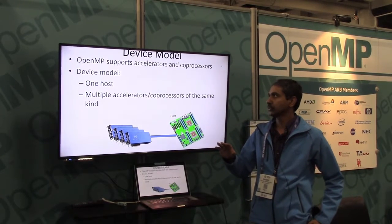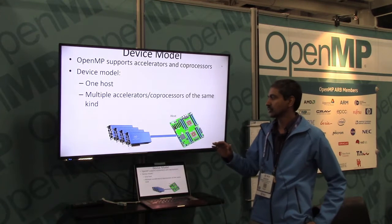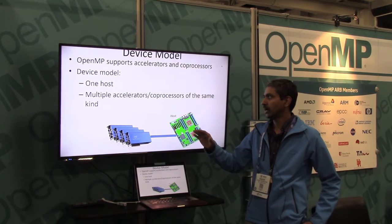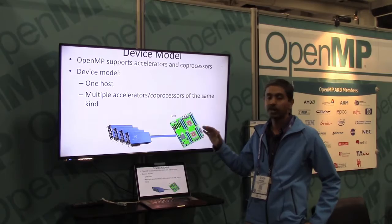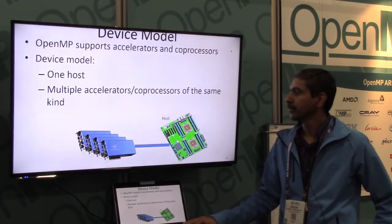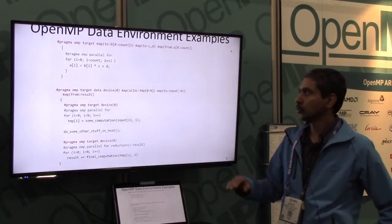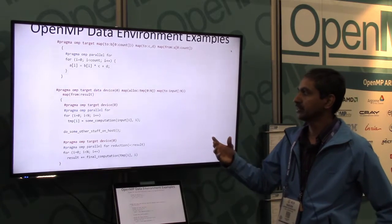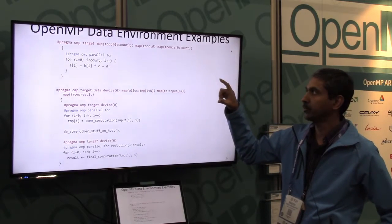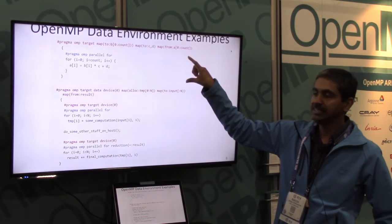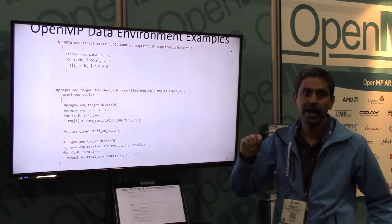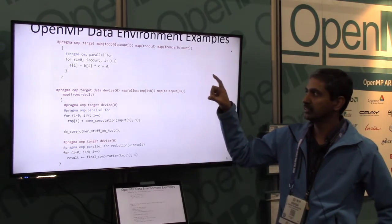OpenMP 4.0 supports accelerators and coprocessors. The device model to begin with supports only accelerators or coprocessors of the same kind from one host — that's how it is defined today in 4.5. OpenMP has this concept of a data environment, so you can have a region of code where you define a data environment, and then for that target region, you specify the data structures that you are mapping from the host to the device.